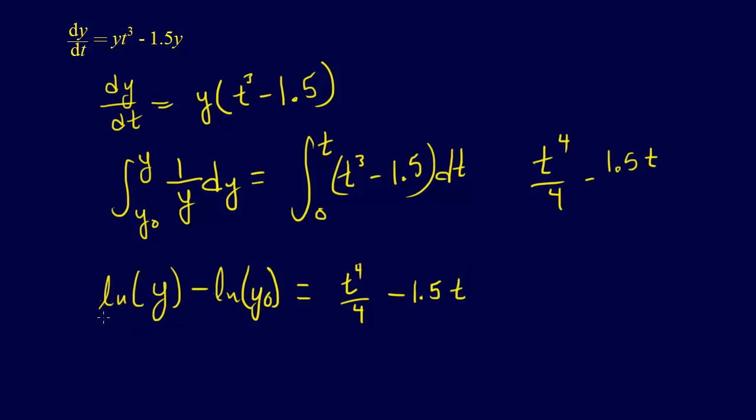Now we can put e as a base on both sides to get rid of these ln's, so e to the ln of y minus ln of y naught is equal to e to the t to the fourth over 4 minus 1.5 t.